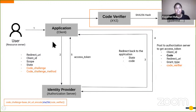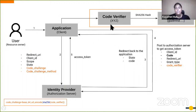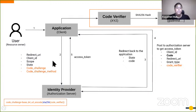Now the application successfully gets authenticated. But as in the previous scenario, if a malicious application was registered under the same redirect URI, it has a chance to get the authorization code. However, if it tries to get the token from the token endpoint, it needs to provide the code verifier in the request. Since the malicious application doesn't have the code verifier, if it tries to generate some random values and send them to the identity provider, the verification will obviously fail and the malicious application will not get the access token. With the help of PKCE, we are able to protect the application from this issue.